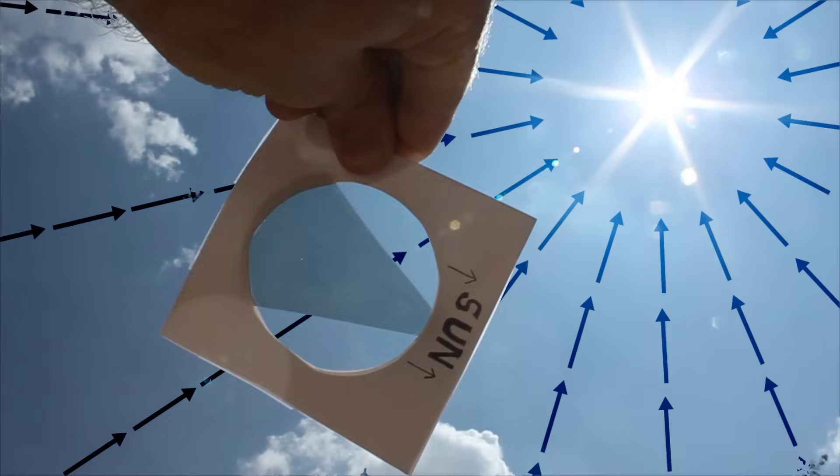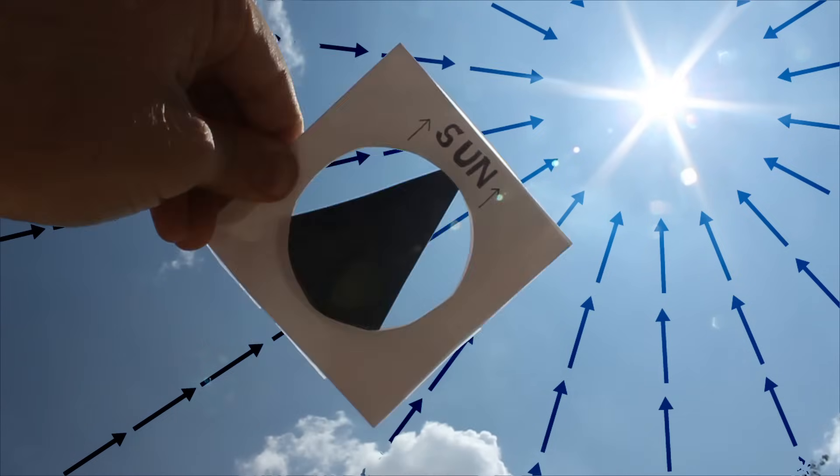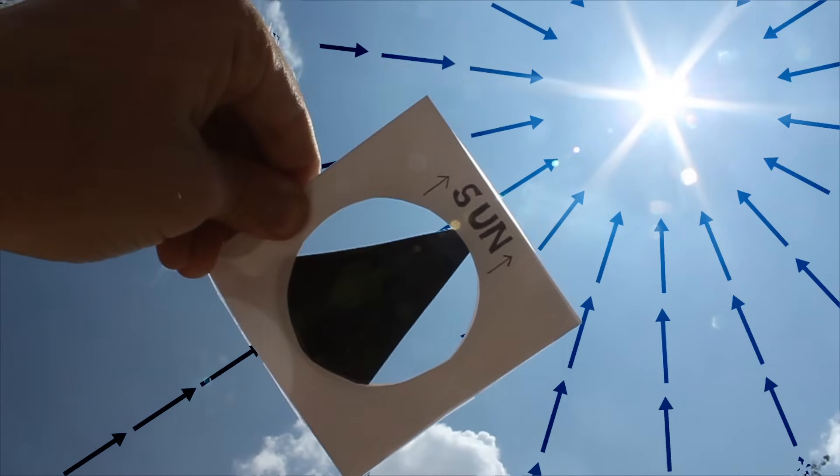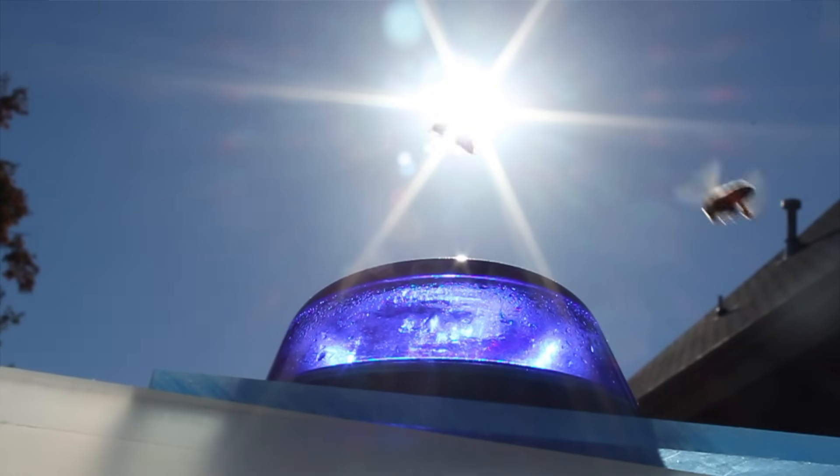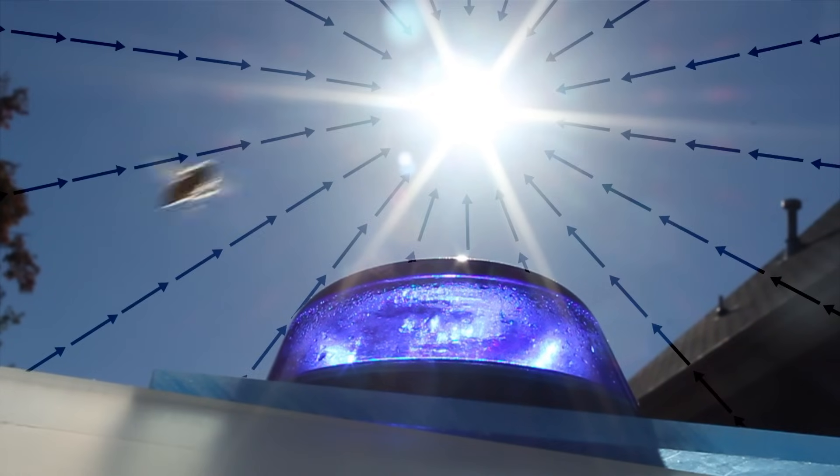This gives the bees a type of solar compass, allowing them to always know the precise position of the sun in the sky. A honeybee's entire environment seems to be constantly pointing towards the sun.